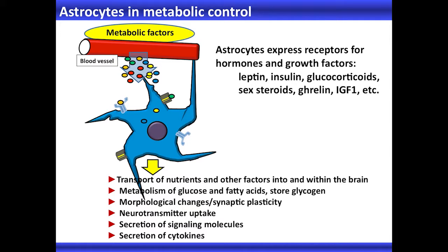Astrocytes control a number of processes in neurotransmission, including neurotransmitter uptake, and they secrete gliotransmitters. So they're directly involved in processes that before were only attributed to neurons. They also secrete cytokines. Any metabolic factors affecting astrocytes can affect a number of processes that will directly affect neurons.